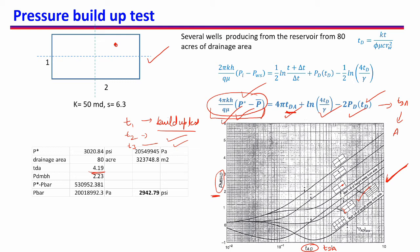Using TDA = 4.19, we can now read PD_MBH from the appropriate MBH chart. The graph shown here is a schematic for explanation purposes only — for the actual calculation you should use the graph in LP Dake or another reference textbook. Using our TDA, PD_MBH comes out to be 2.23.